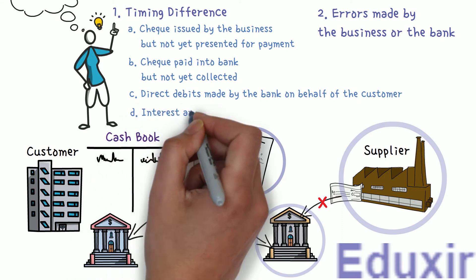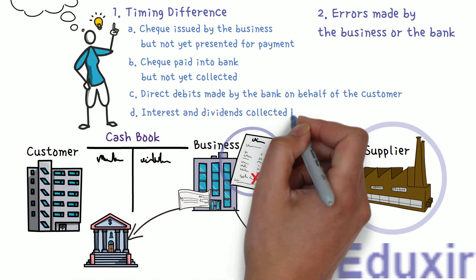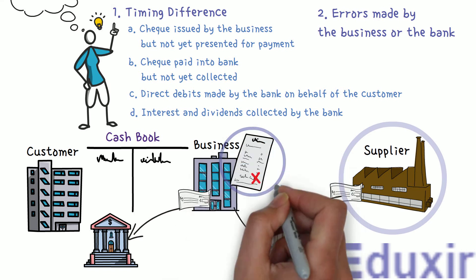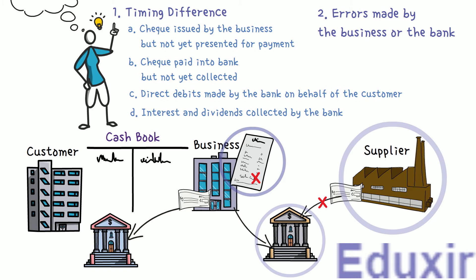The next reason is interest and dividends collected by the bank. When the bank collects interest and dividends on behalf of the customer — meaning our business — they are immediately credited to the customer's account. But the business will not know about these transactions until the bank statement is received, so there will be a difference in the cashbook and the passbook. We will limit the scope of this recap to these four reasons for timing difference, and will not discuss errors here.